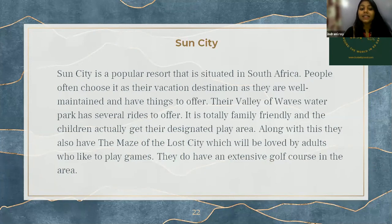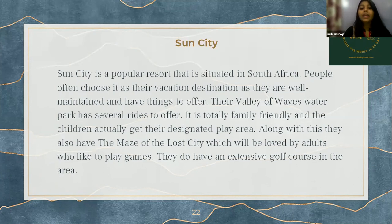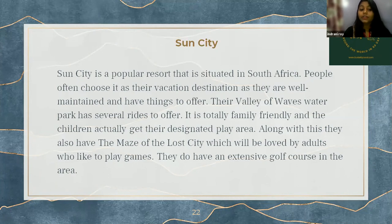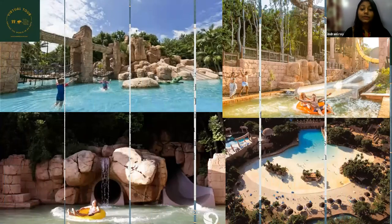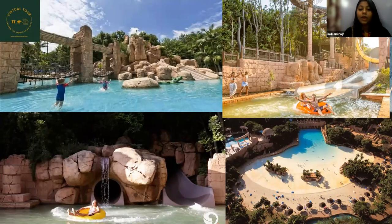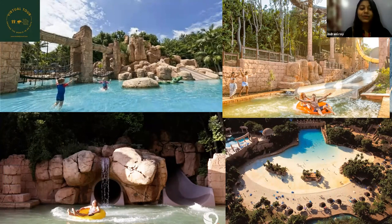Next is Sun City, a popular resort situated in South Africa. People often choose it as their vacation destination as it is well-maintained and has a lot to offer. Their Valley of Waves Water Park has several rides to offer. It is totally family-friendly and children get their own designated play area. They also have the Maze of the Lost City, which will be loved by adults who like to play games, and an extensive golf course in the area. Here you can see the picture of Sun City — look how they are enjoying. Like its name, it looks very sunny.